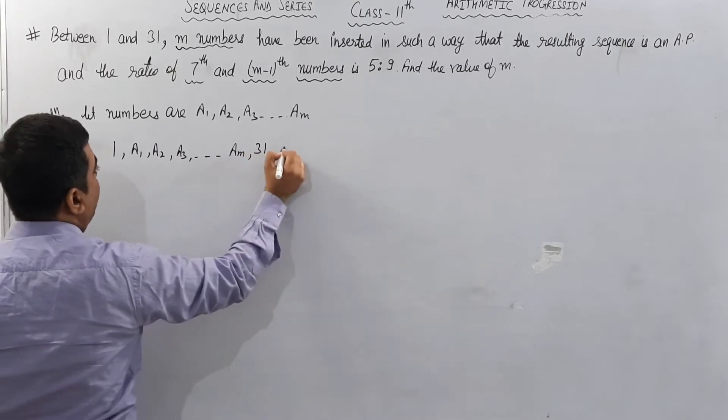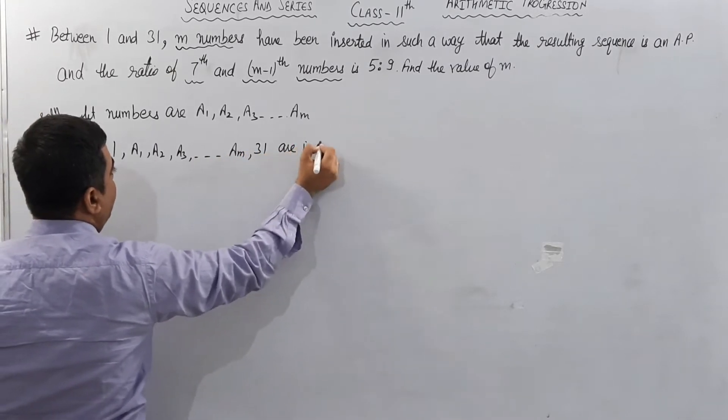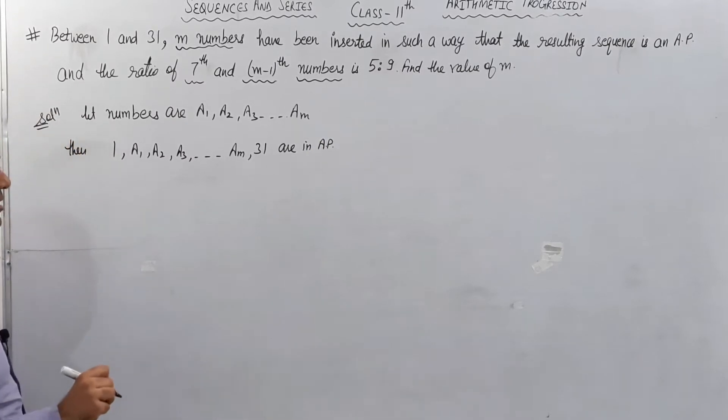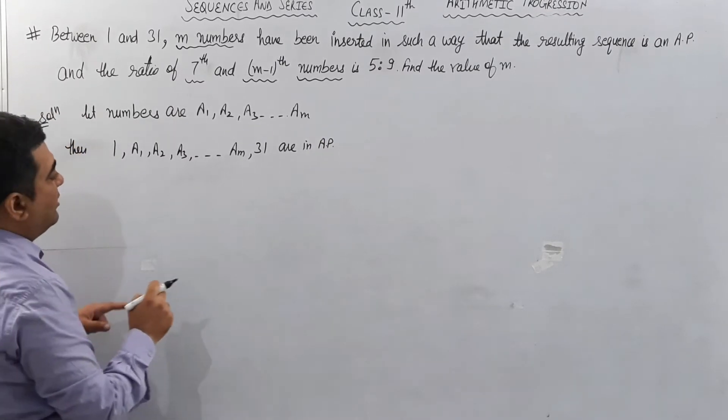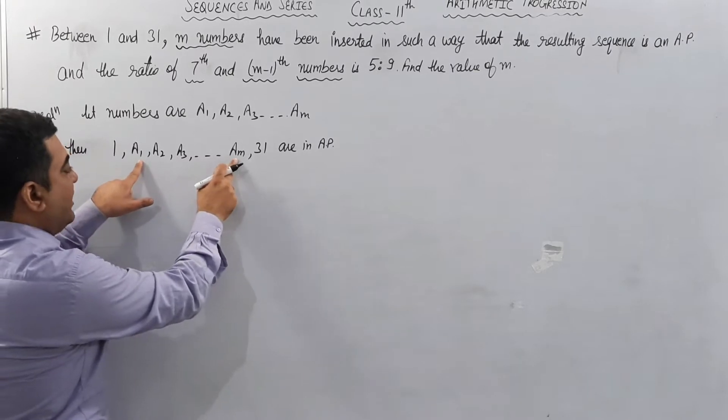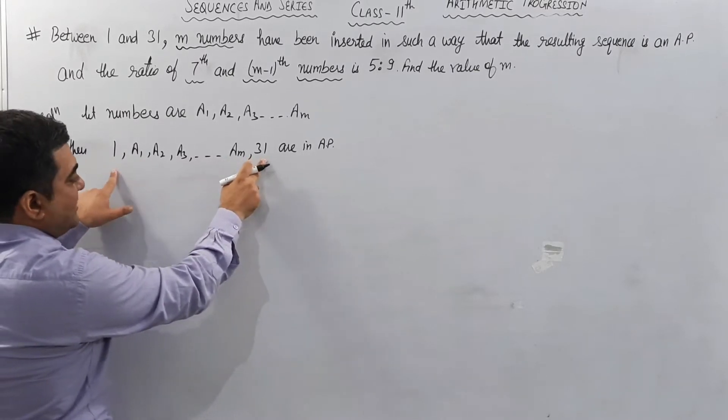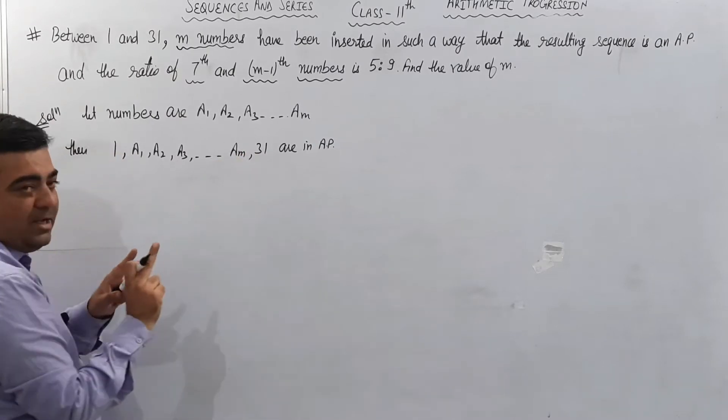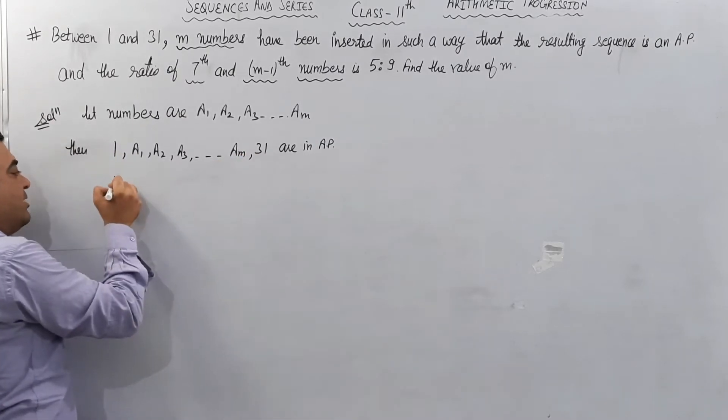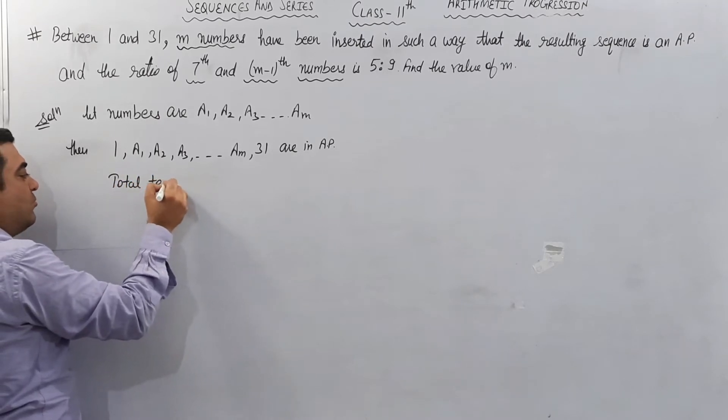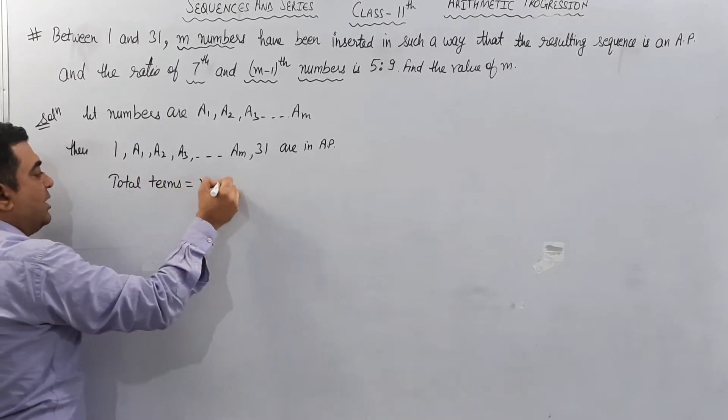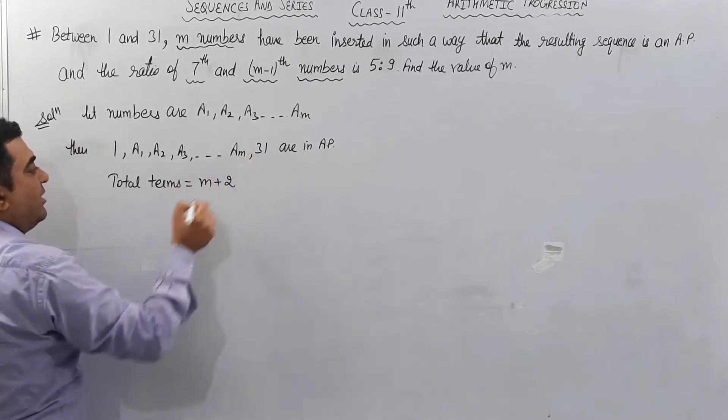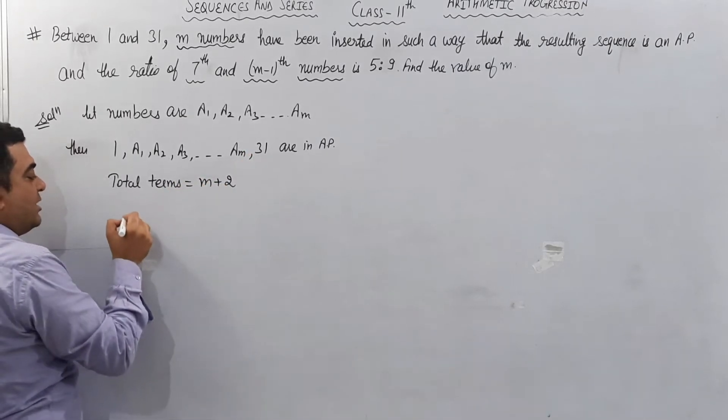Now check how many total terms are here. M numbers filled in between and 2 already present, then total terms equal m plus 2. Now 31 is the (m+2)th term.